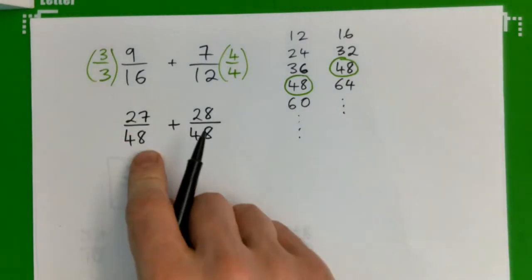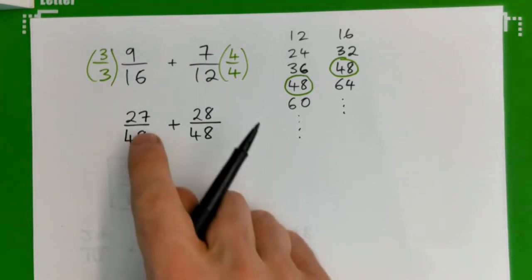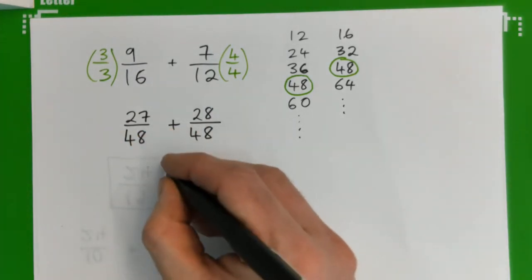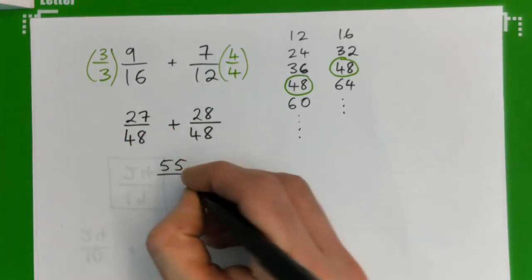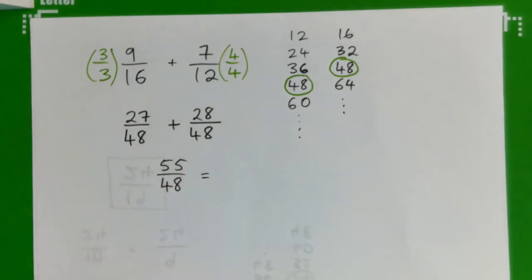So 27/48 plus 28/48, and that is 55/48. And let's write that as a mixed number for fun.